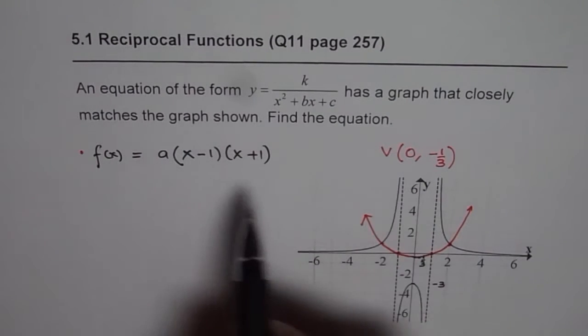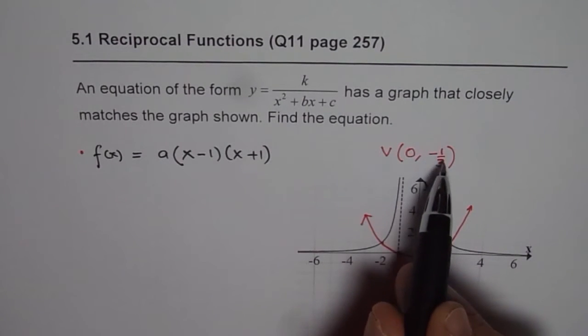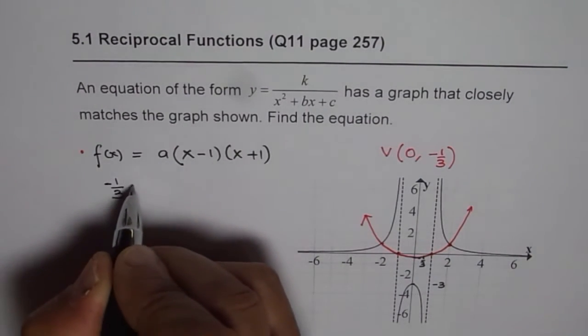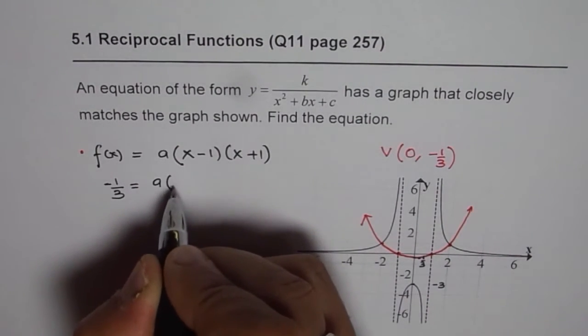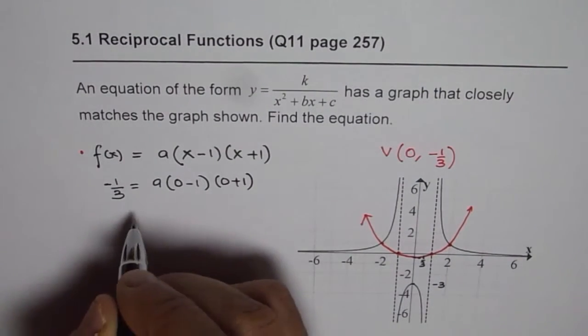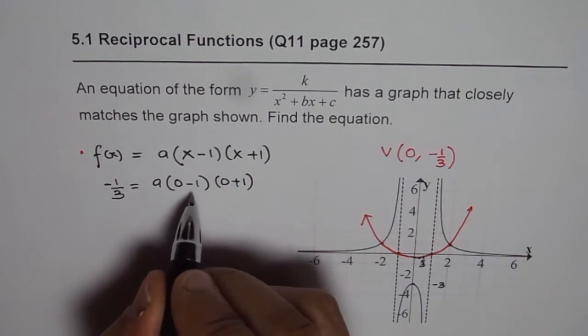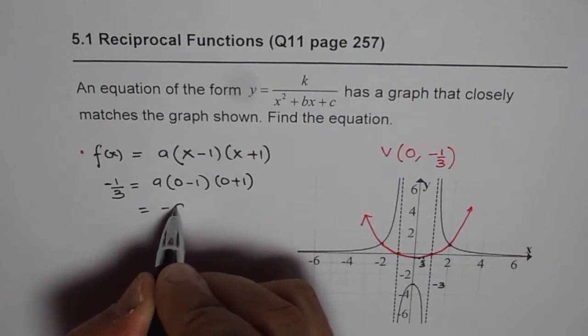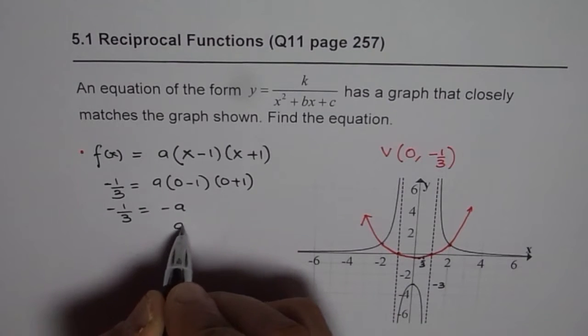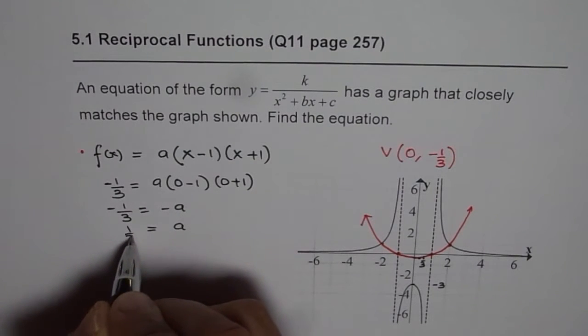So let us substitute 0 for x and minus 1 over 3 for y. So we get minus 1 over 3 equals a times 0 minus 1 times 0 plus 1. Now that gives us minus a. So minus a equals minus 1 over 3 or a equals 1 over 3.